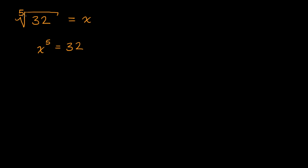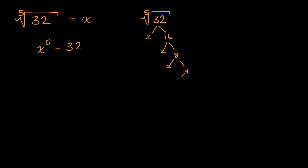There are a couple of ways to approach these higher order roots. Let me rewrite the fifth root of 32. One way is to factor 32 and see if there are factors that show up five times. 32 is an even number, so it's divisible by two. It's two times 16, 16 is two times eight, eight is two times four, four is two times two. So this is two to the fifth power. You can rewrite this as the fifth root of two to the fifth power, which equals two.